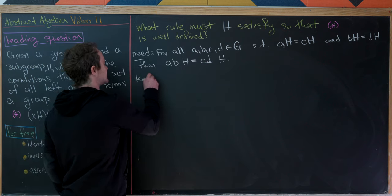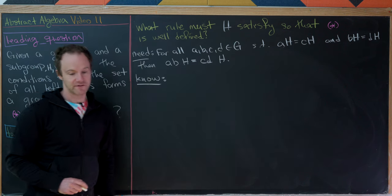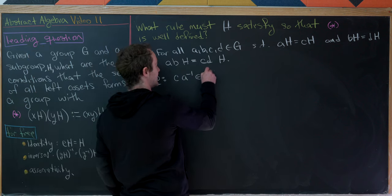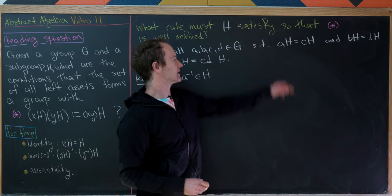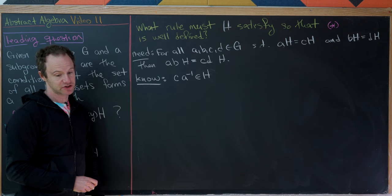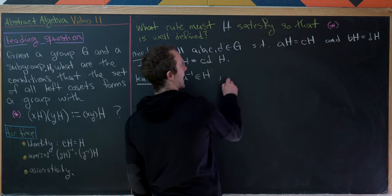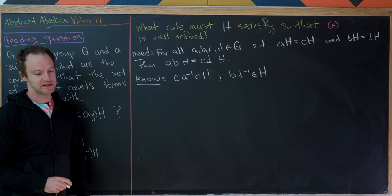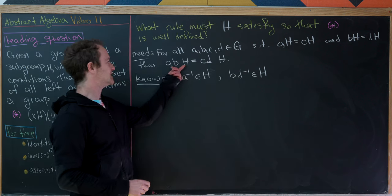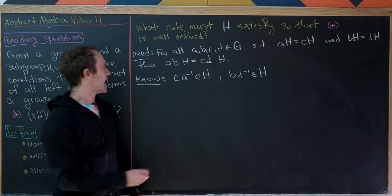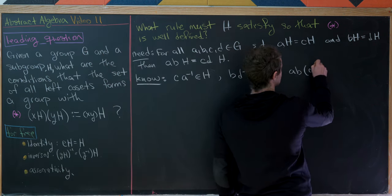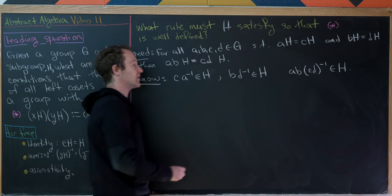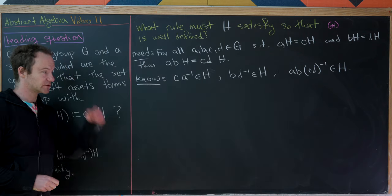From the equality of those cosets, we know: CA⁻¹ is an element of H (from AH = CH), and BD⁻¹ is also an element of H (from BH = DH). Furthermore, since these two cosets are the same, AB times (CD)⁻¹ is an element of H. These three facts follow from the equality of those cosets, and this is actually equivalent to coset equality by the big theorem proved two videos ago.